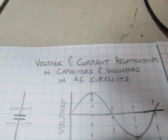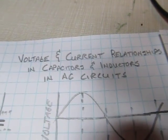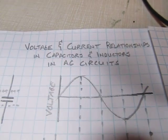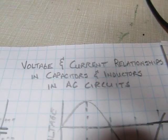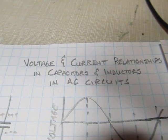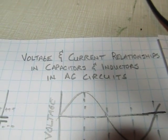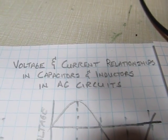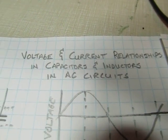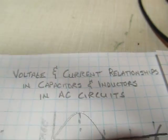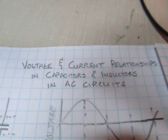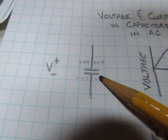This video was requested a couple months ago by one of my YouTube viewers. What we're going to look at is the voltage and current relationships in capacitors and inductors. You often hear things like the current leads the voltage in capacitors and the current lags the voltage in inductors. We're going to talk about what that means and actually show it on the scope with some stuff on the breadboard.